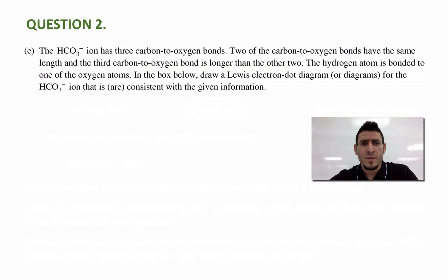The question says, the hydrogen carbonate ion has three carbon to oxygen bonds. Two of the carbon to oxygen bonds have the same length, and the third carbon to oxygen bond is longer than the other two. The hydrogen atom is bonded to one of the oxygen atoms.